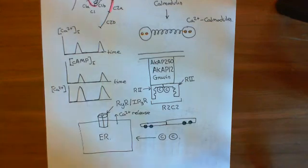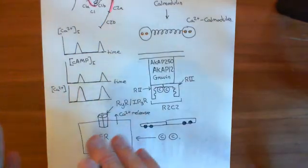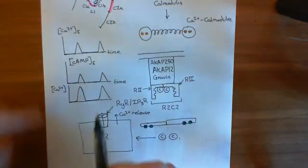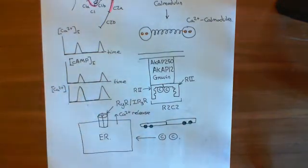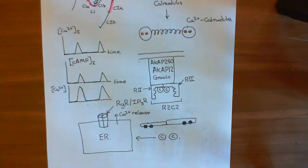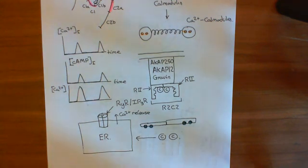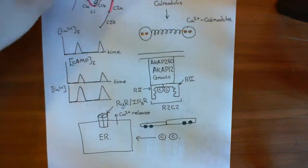That whole mechanism was just to amplify these calcium pulses. The important thing is that you have these calcium oscillations in the axon growth cone. Finally, we'll get to EphrinA — but we'll do that in the next video.